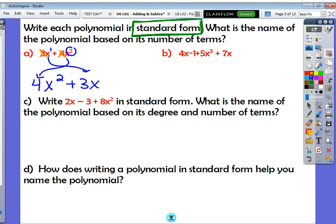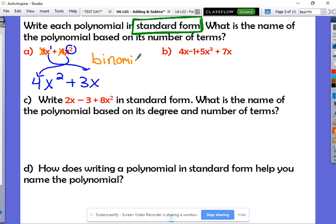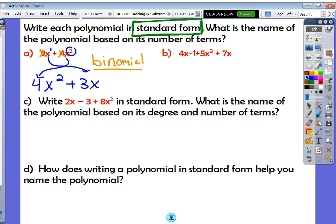And then we would also tell us, what kind of polynomial is it based on a number of terms? This would be a binomial. It has two terms. Take 30 seconds. See if you can get letter B in standard form and then name it. Press pause and try out getting letter B in standard form.